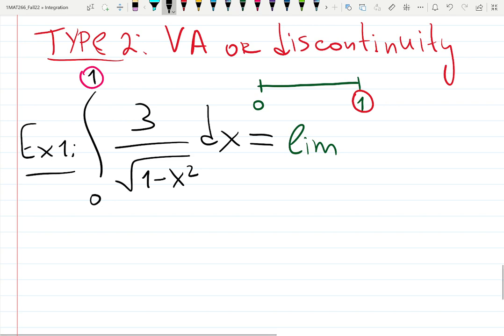So we're going to have integral from zero. Choose any letter. What letter do you like? B. Well, we did B last time. Anything else? M. Let's do M. M goes to 1, 3 over square root 1 minus x squared dx.